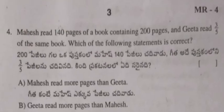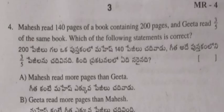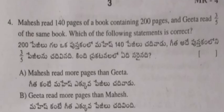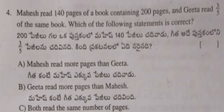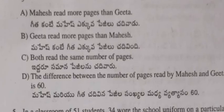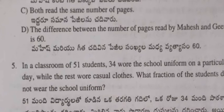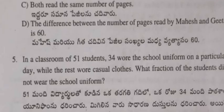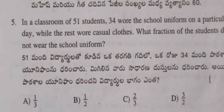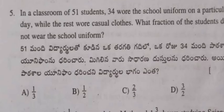Question 4: Mahesh read 140 pages of a book containing 200 pages, and Gita read 3/5 of the same book. Which of the following statements is correct? (A) Mahesh read more pages than Gita. (B) Gita read more pages than Mahesh. (C) Both read the same number of pages. (D) The difference between the number of pages read by Mahesh and Gita is 60.